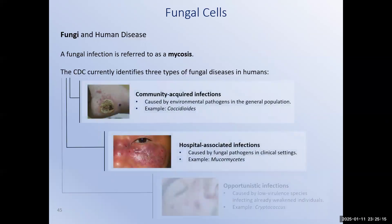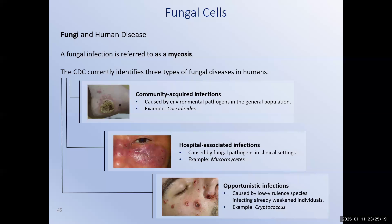An infectious disease caused by a fungus is called a mycosis. There are three types of mycoses: community-acquired, hospital-associated, and opportunistic. Community-acquired fungal infections are caused by fungi in our everyday environment and can cause disease even in people with normal, healthy immune systems. Hospital-associated mycoses are caused by fungi generally found in healthcare settings that have developed resistance to antifungal drugs and can be quite dangerous. Opportunistic fungal infections occur in people with poorly functioning or absent immune systems — normally harmless fungi that cause disease due to impaired immune functioning of the host.